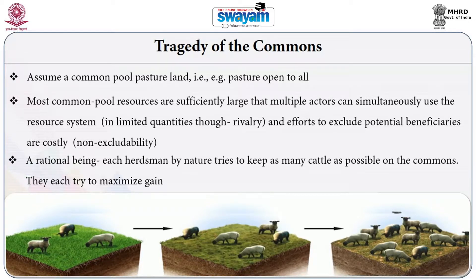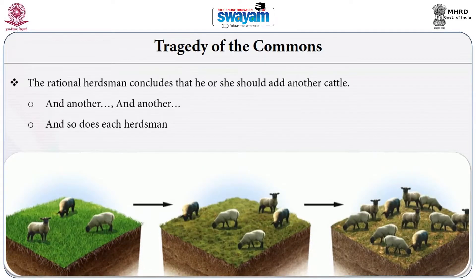All of them will try to maximize gain by having more and more animals. For instance, there are 10 households around that pasture, each starting with only two animals. Assume each animal fetches 10,000 rupees per annum, so each household earns 20,000 rupees annually. If a herdsman adds one more animal, income increases by another 10,000 rupees — from 20,000 to 30,000 rupees — so there is a clear incentive to do so.